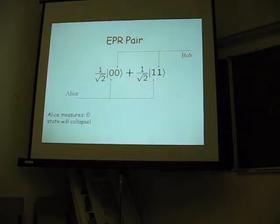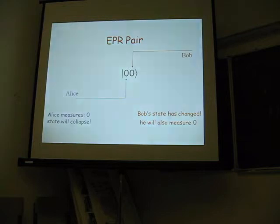But if Alice measures a 0, then the state collapses to this state, by this description of quantum mechanics, and Bob will also measure a 0. So in particular, if Alice measures a 0, she knows that Bob will also measure a 0. In particular, his state has changed into the 0. It was a probability of 0 and 1, and now it's a 0.